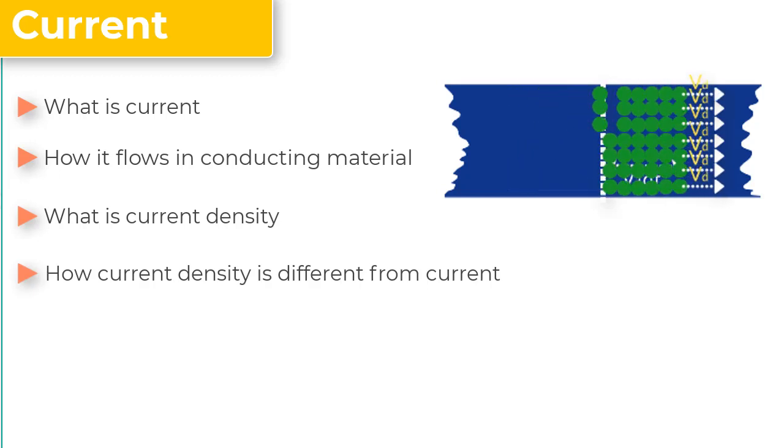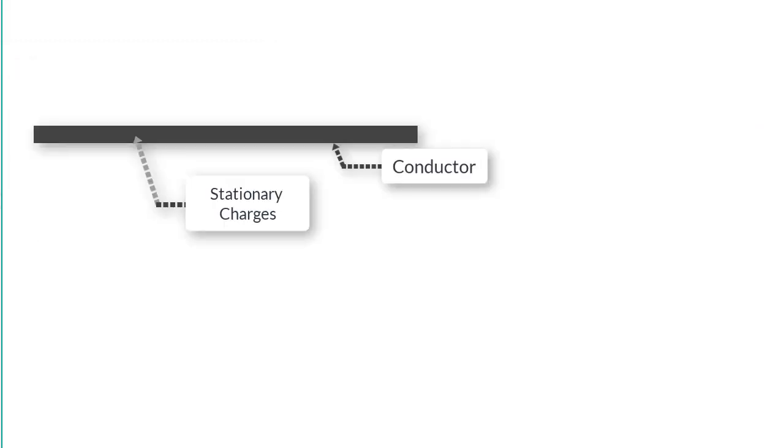Simply put, any motion of charge from one place to another constitutes current. In the earlier chapter on electrostatics, we assumed the charges are stationary and do not move. Therefore, we can safely say that there is no current under this situation.